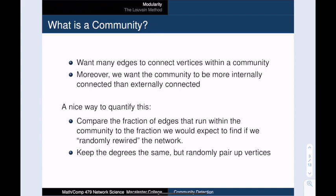So what is a community? Our general rule of thumb is that we want many edges within a community and few edges between communities. And note that this definition is both local and global. Here's a nice way to quantify this. We start with a network and partition into communities. We then look at the fraction of edges that run between the communities. Ideally, we'd like this to be low. But what does that mean?